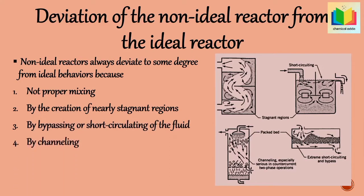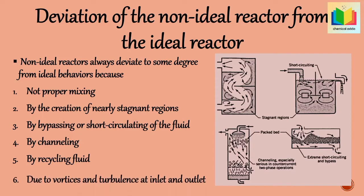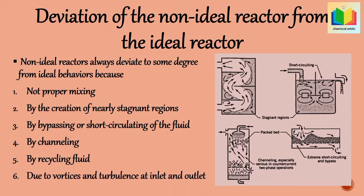Further reasons include bypassing or short-circuiting the fluid, and channeling. In short-circuiting, the inlet fluid takes a shortcut route to the outlet without undergoing conversion in the bulk of the reactor. Similarly, channeling occurs in packed bed reactors, where inlet fluid bypasses the catalyst particles to the outlet. Other reasons are recycling of fluid, and vortices and turbulence at the inlet or outlet in plug flow reactors, which also affect the behavior of the ideal reactor.